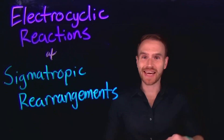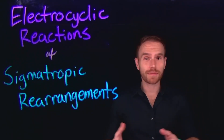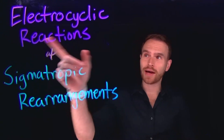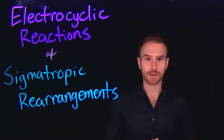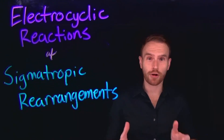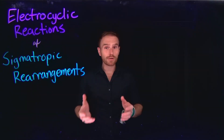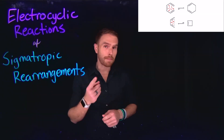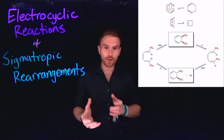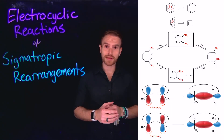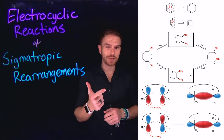I am so glad you're here because today we're diving into a really cool topic in organic chemistry. We're going to be learning all about electrocyclic reactions and sigmatropic rearrangements. These are like little magic tricks that molecules can do, and we're going to uncover their secrets today. Not only are we going to learn about the mechanisms for these reactions, but we'll also look at the stereochemical outcomes depending on whether these reactions take place under heat or photochemical conditions.